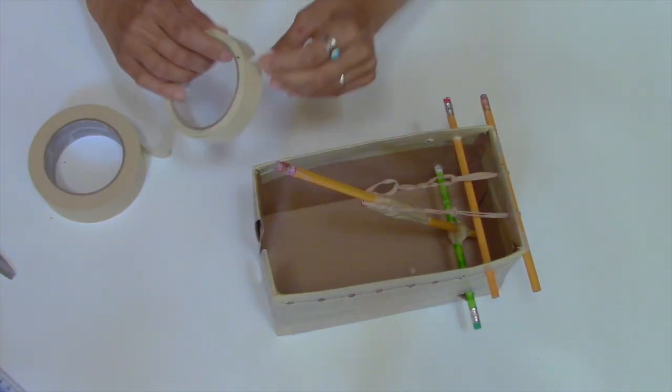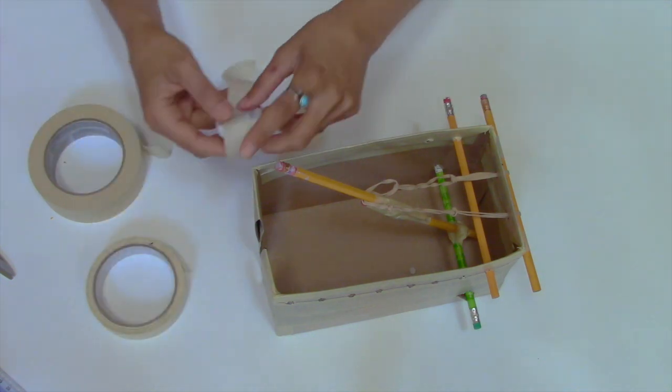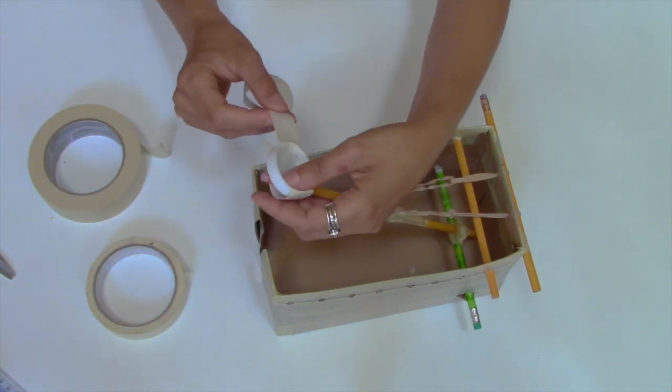Secure your cap to the end of the throwing arm with masking tape and the basic design of the box catapult is complete.